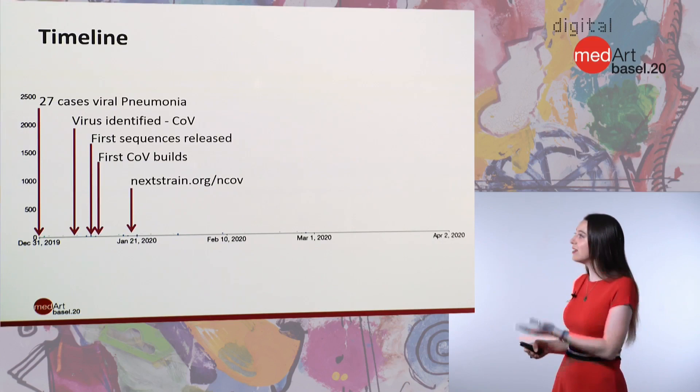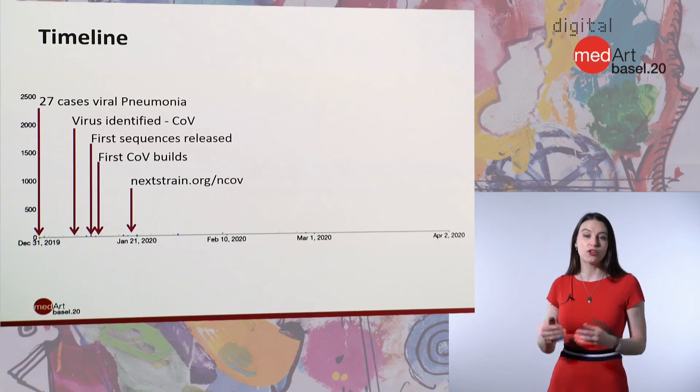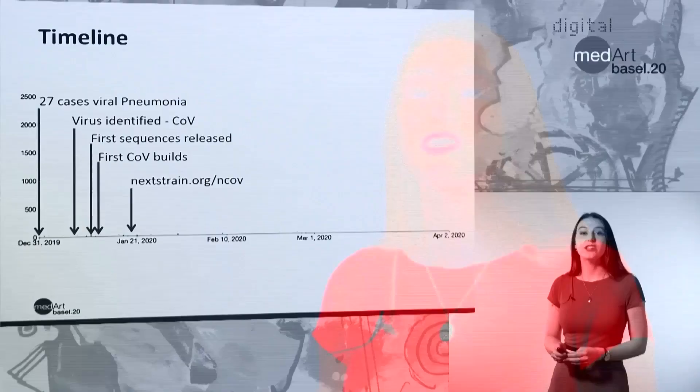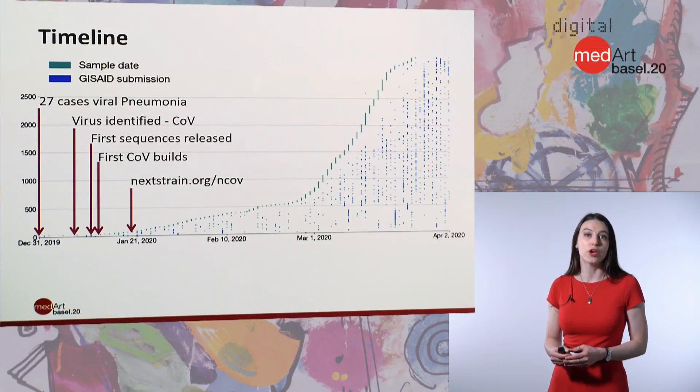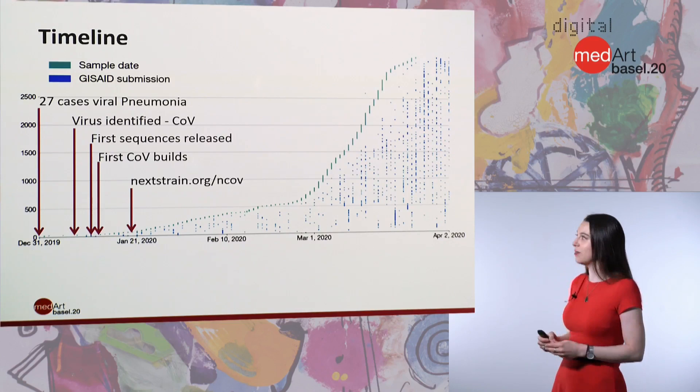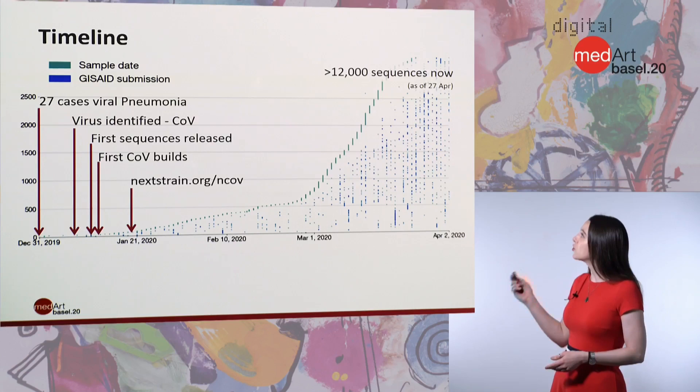Then, in the middle of January, we started our dedicated Nextstrain build showing how the novel coronavirus — now known as SARS-CoV-2 — has spread around the world. The fact that these new sequences became available so quickly from scientists in China really set the precedent for what happened with the rest of the epidemic. The number of samples has increased dramatically through the hard work of scientists who have sequenced viruses and shared their data publicly. We had about 3,000 samples at the beginning of April, and now, on the 27th of April, we have over 12,000 sequences.